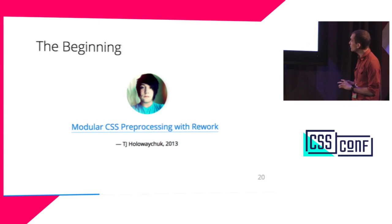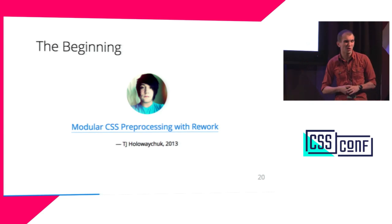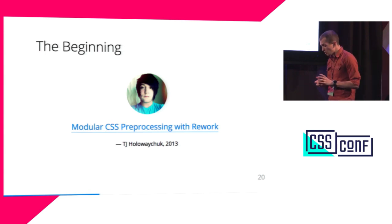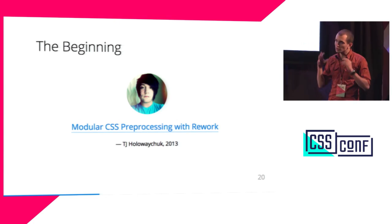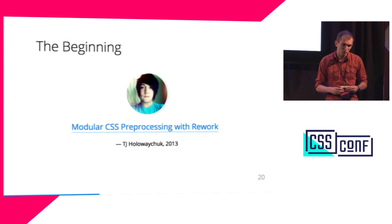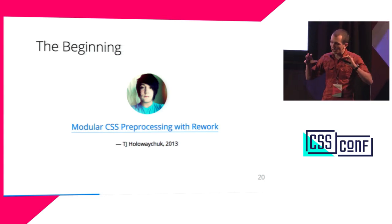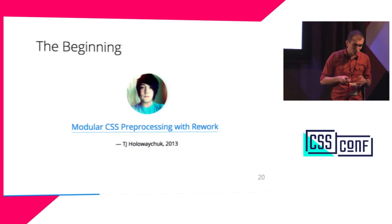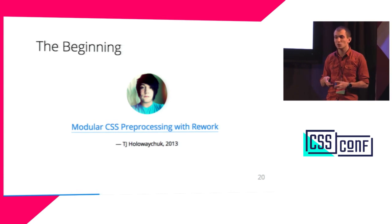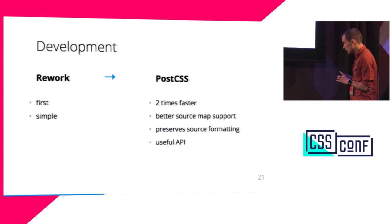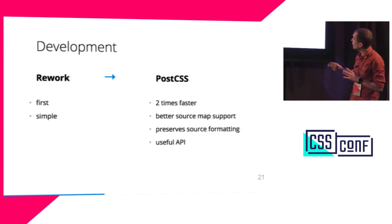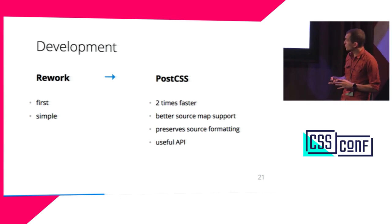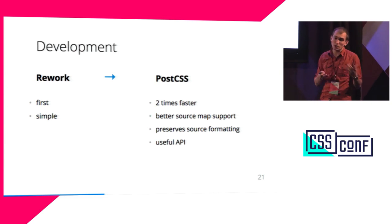But PostCSS was not the first. The original idea was by TJ Holowaychuk — he wrote about half of NPM packages — and he was the Stylus maintainer three years ago. He understood that preprocessors have big problems inside, and there is no way to fix them because preprocessors' problems are architectural. So he created a new way to process CSS — a modular CSS processor tool called Rework. And the first version of Autoprefixer was based on Rework. But too quickly, Autoprefixer became too big for Rework. So we created PostCSS, because Rework was just a proof of concept — just the first generation of modular CSS processing. With PostCSS we have a better parser, better API, and better source map support.